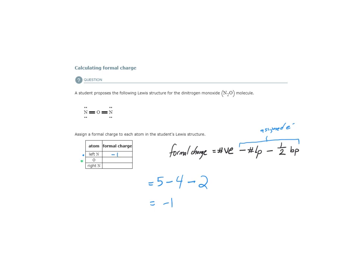What about the oxygen atom? We have the number of valence electrons for an oxygen atom, which is six, minus the number of lone pairs of electrons around the oxygen atom, which is zero, minus half of the bonded pairs of electrons surrounding the oxygen atom. Counting those: one, two, three, four — half of that is two, and the same on the other side, so two and two is four. Six minus zero minus four equals two. The formal charge on that oxygen is positive two.